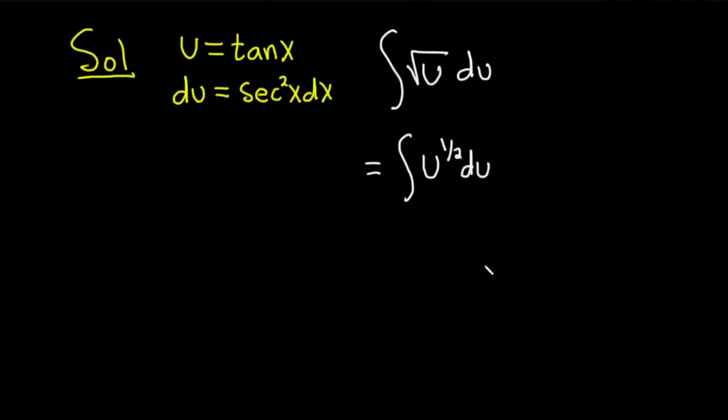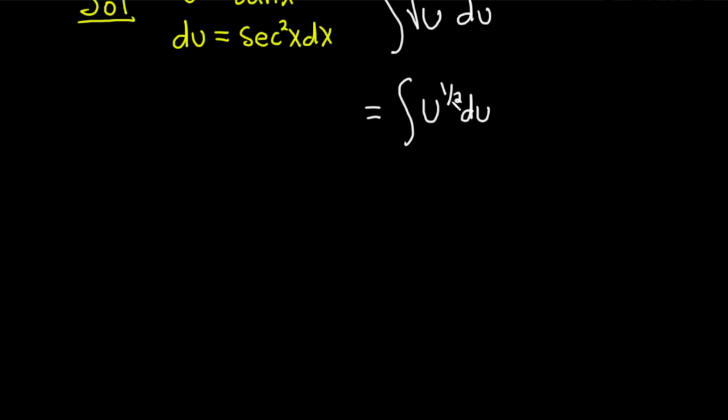And now we're in a good place. We can apply that power rule. So we add one to the exponent, and we divide by the result.